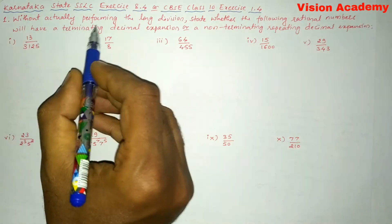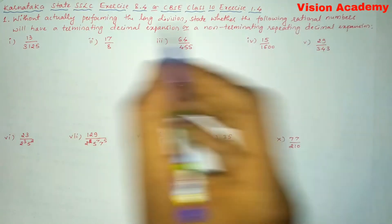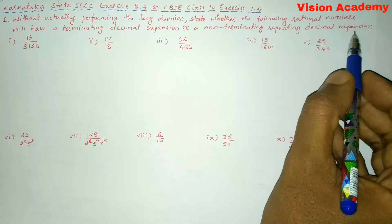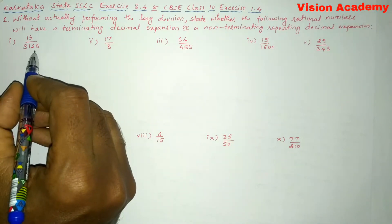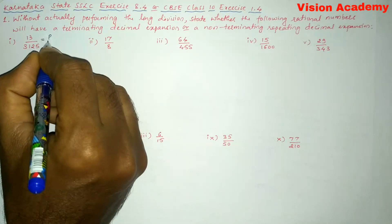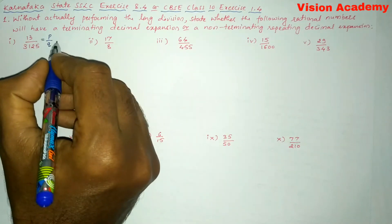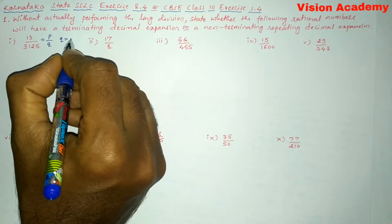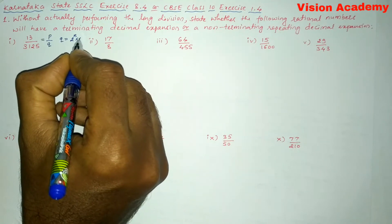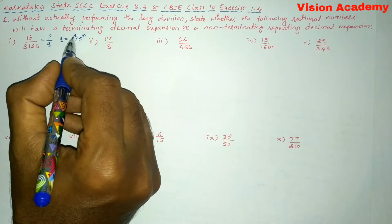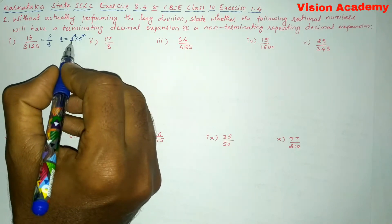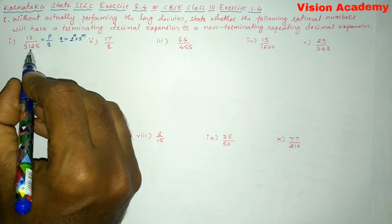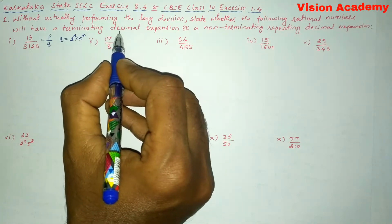Question number one: without actually performing the long division, state whether the following rational numbers will have a terminating decimal expansion or a non-terminating repeating decimal expansion. The condition is: the denominator Q should have the form 2 to the power n into 5 to the power m, where n and m are any positive integers. If it is not in this form, then it is non-terminating repeating. If Q is in this form, then it is terminating.